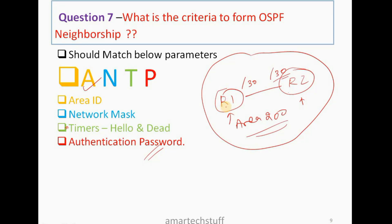'P' stands for password — if a password is configured on R1 for OSPF neighborship, then the same password should be configured on R2. Password is an optional parameter. So always remember these four parameters using 'A and TP': A for Area, N for network mask, T for timers, and P for password.